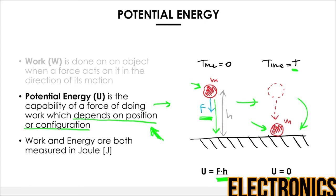Work and energy are interchangeable in a way, so they are both measured in joules. One important thing to highlight is that the potential energy of an object is not an absolute value. Every potential energy is defined plus or minus a certain arbitrary constant. As long as we apply the same constant to all other potential energies in the system, everything works.